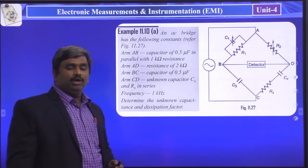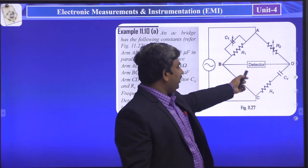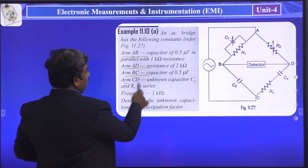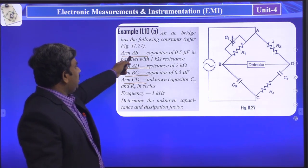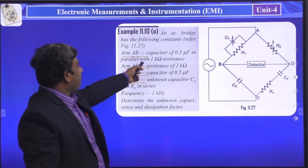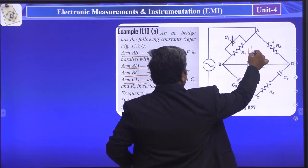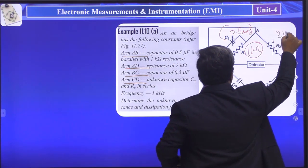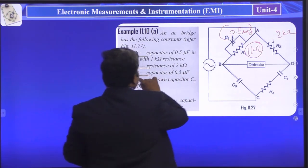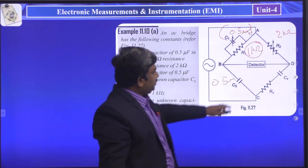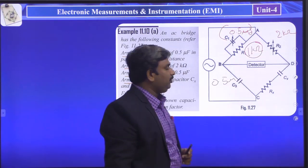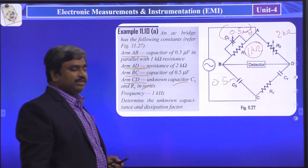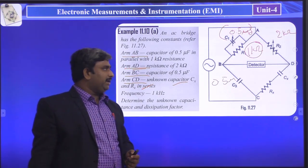Based on the Schering Bridge, we have a problem. An AC bridge has the following constants. Arm AB: capacitor C1 = 0.05 µF in parallel with R1 = 1 kΩ. Arm AD: R2 = 2 kΩ. Arm BC: capacitor C3 = 0.5 µF. Arm CD: unknown CX and RX. Frequency = 1 kHz. Determine the unknown resistance and capacitance.